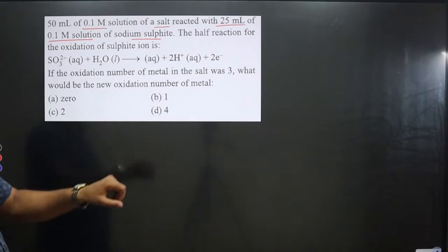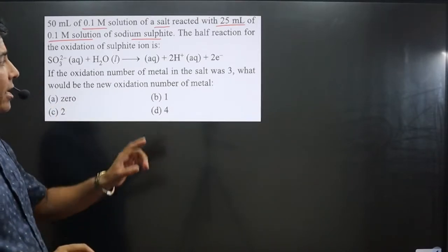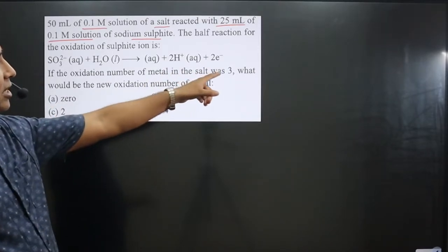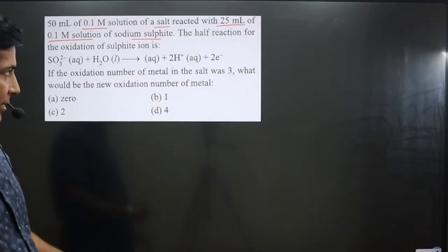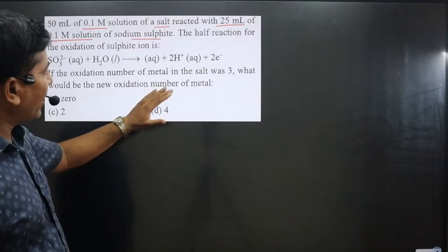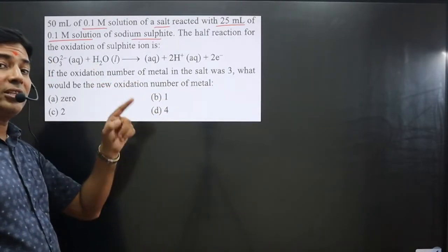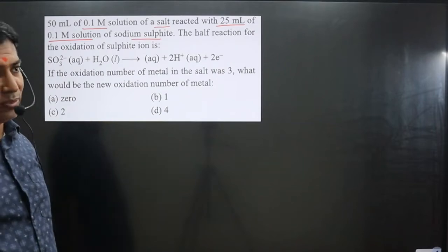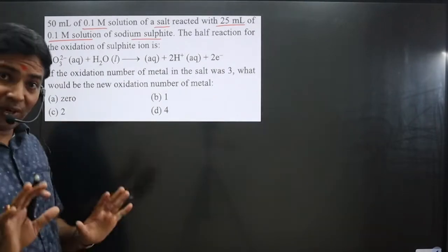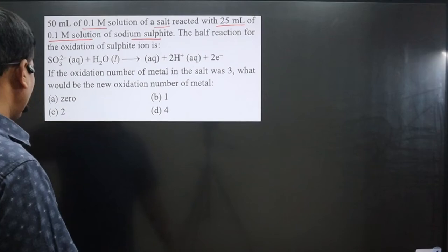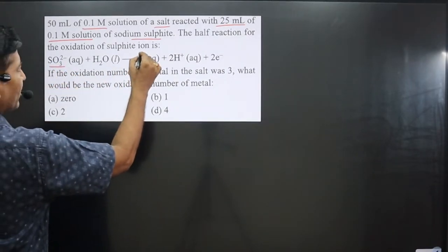The oxidation number of the metal in the salt is plus 3. The unknown salt contains a metal in the +3 oxidation state. The question asks: what would be the new oxidation number of the metal when the salt participates in the reaction? Something is missing here — the sulfite ion is converting into sulfate ion.